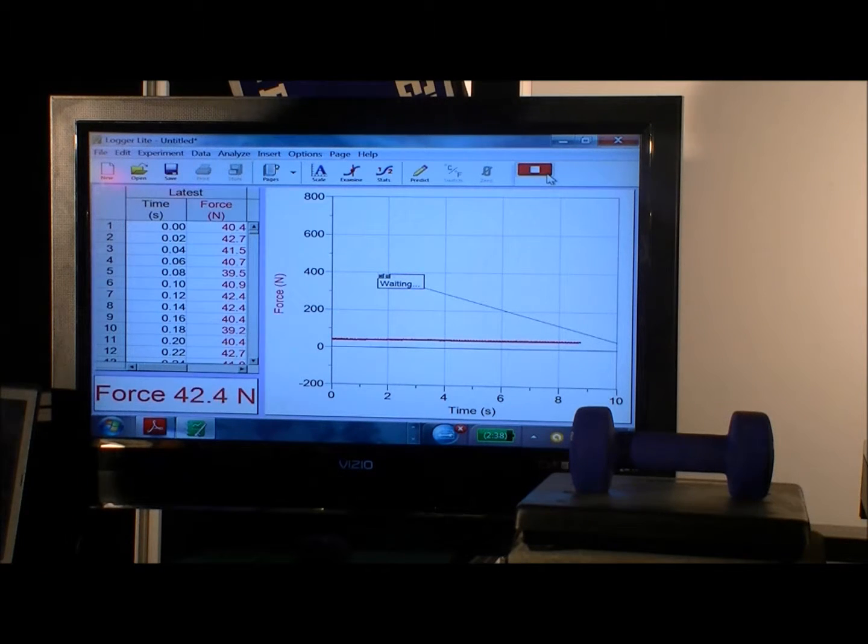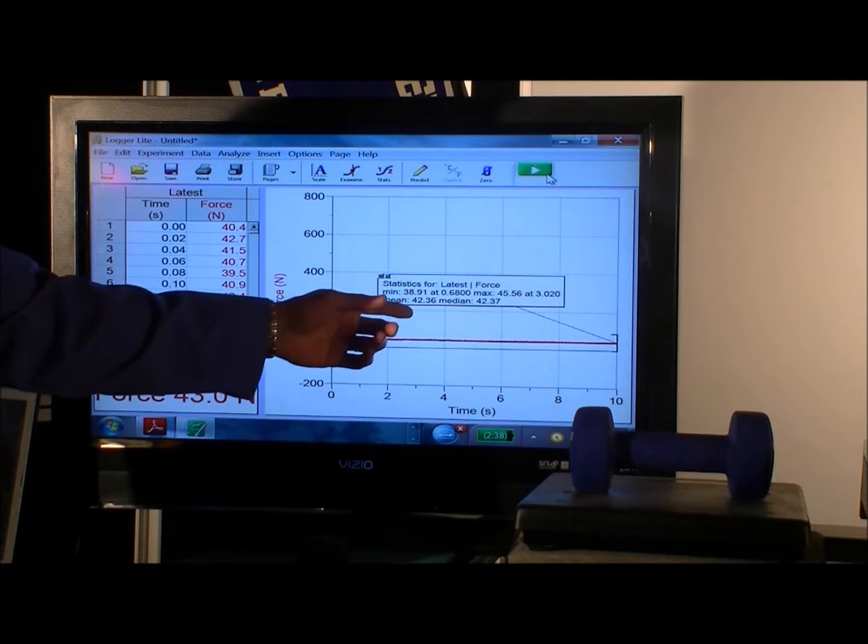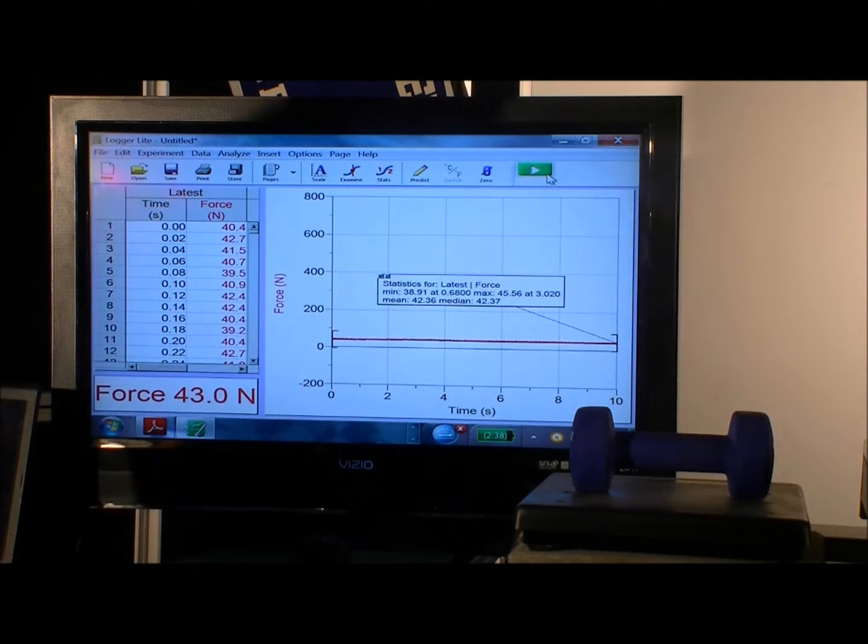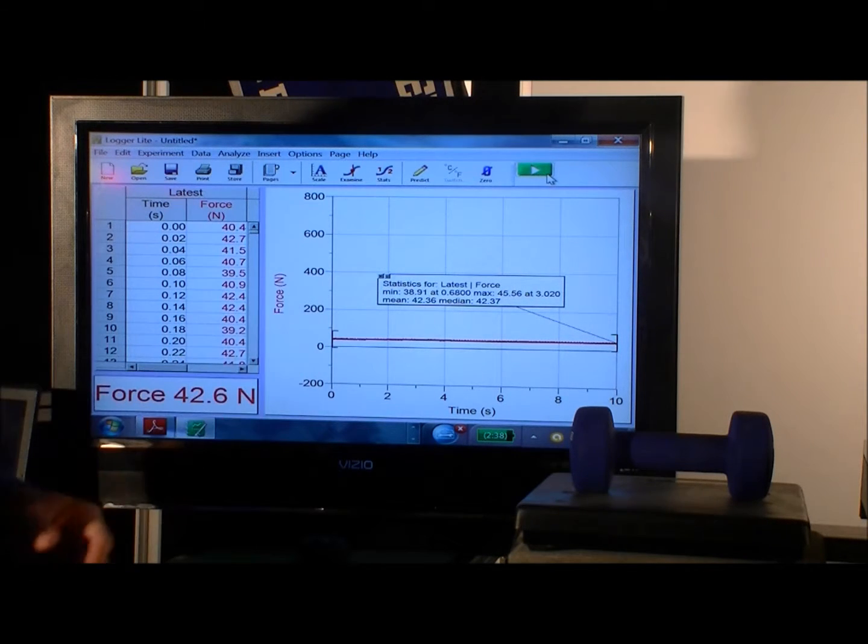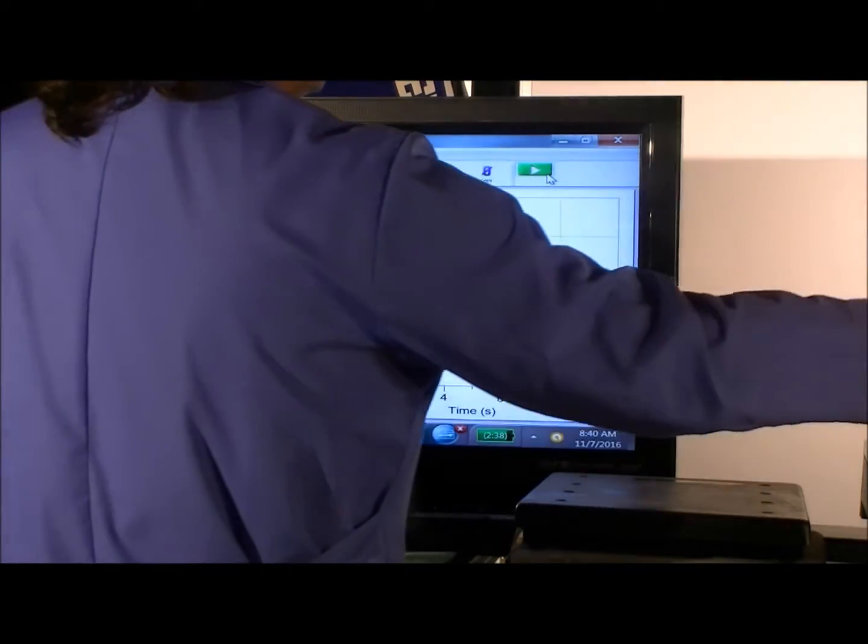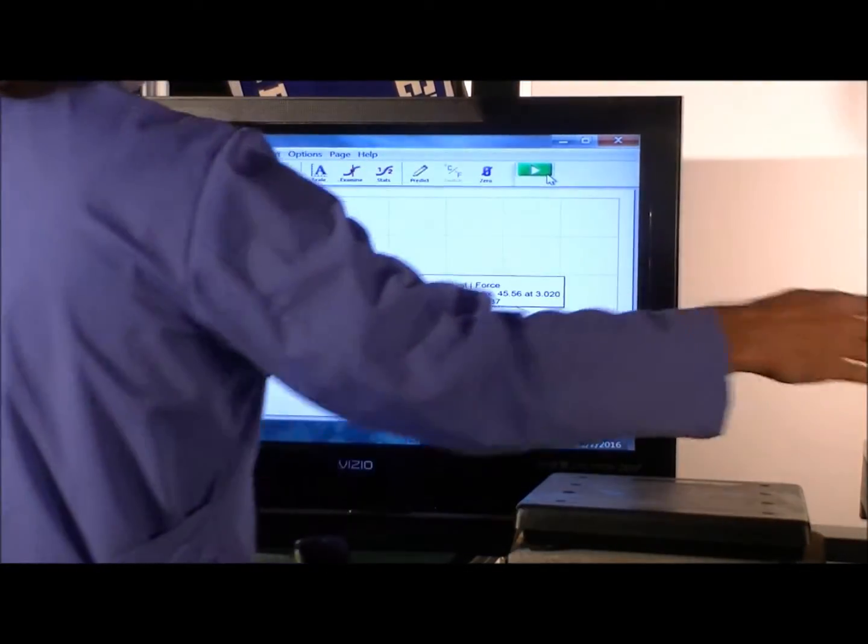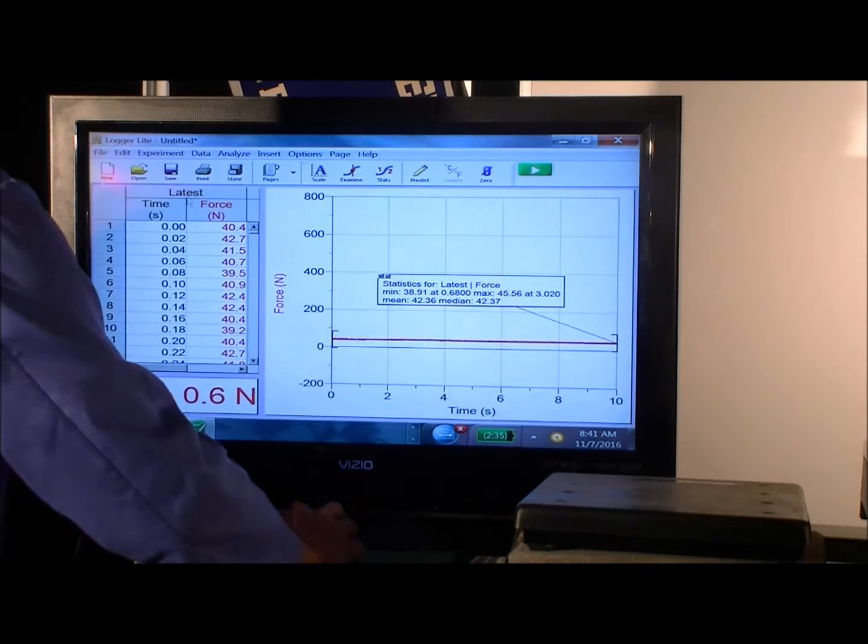And now let's go ahead and average for 10 seconds, because if you just leave the static situation on there it'll average over the 10 seconds and then we can see. So now it says that the mean is 42.36, and 42.36 is within 1% of 42.28, so now we've got some confidence in our calibration.